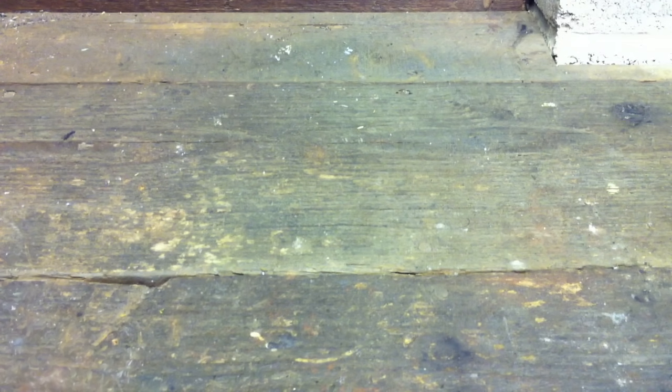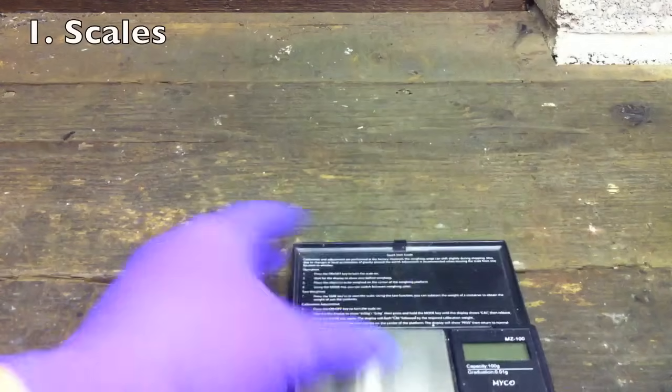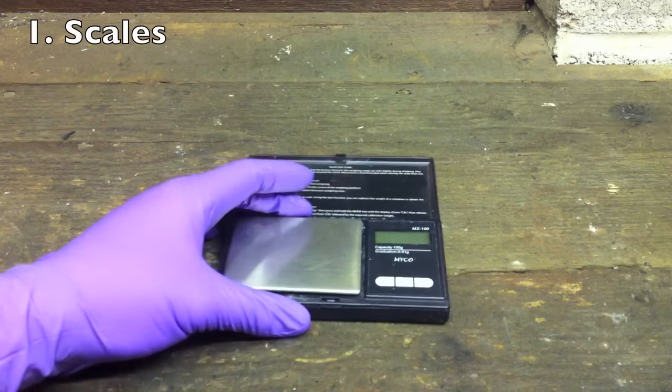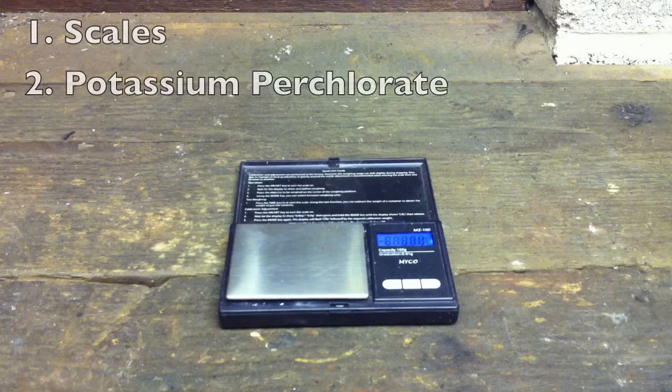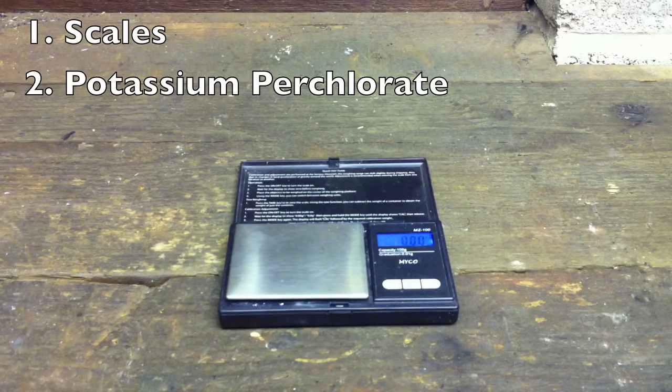First what you need is scales. You want to measure out 7 grams of potassium perchlorate, preferably air flow.